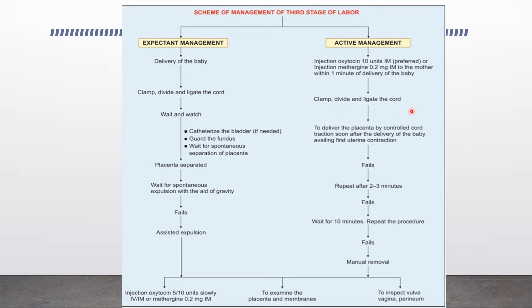In active management, Injection Oxytocin is given within one minute of delivery of the baby, or upon delivery of the anterior shoulder. Then clamp and divide the cord. Deliver the placenta by controlled cord traction soon after delivery of the baby, awaiting the first uterine contraction. When the first uterine contraction starts, begin controlled cord traction, repeating after 2 to 3 minutes if needed.